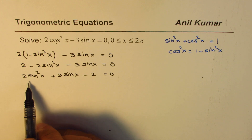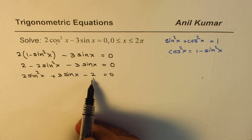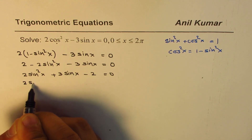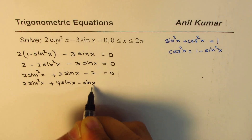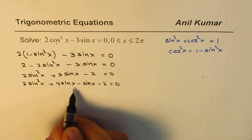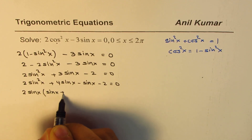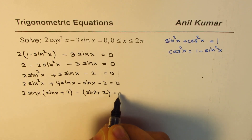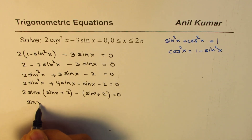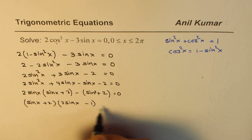Now we are looking for factoring this particular equation. The product is 2 times negative 2 equals negative 4, and we need a sum of plus 3, so 4 and negative 1 work for us. We can write this as 2sin²x plus 4sinx minus sinx minus 2 equals 0. Combining the first two terms, we factor 2sinx, getting (sinx + 2), and the remaining terms give (sinx + 2) as a common factor.